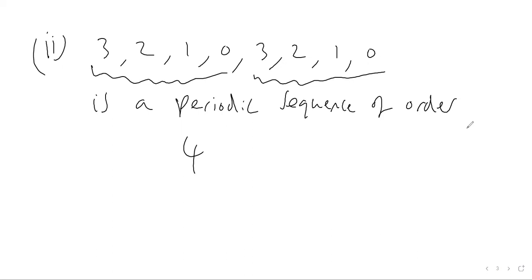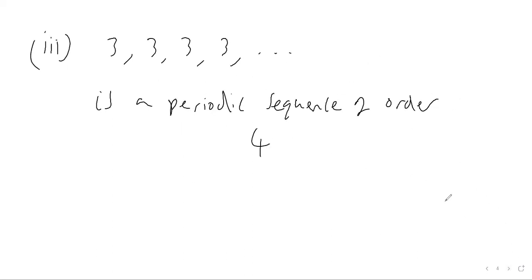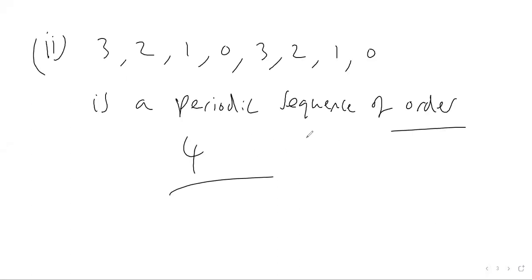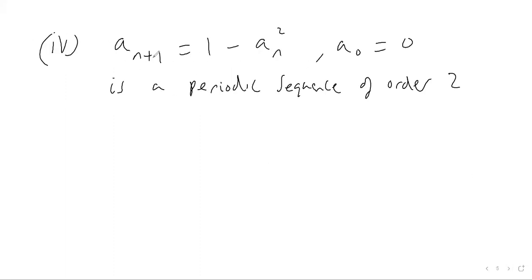And then this one here — sorry, there's a mistake — this should be a periodic sequence of order one. So this one is order four, and this one is order one, because the sequence repeats itself every single term. The order of repetition is one.